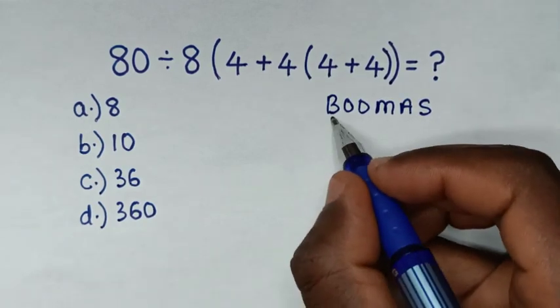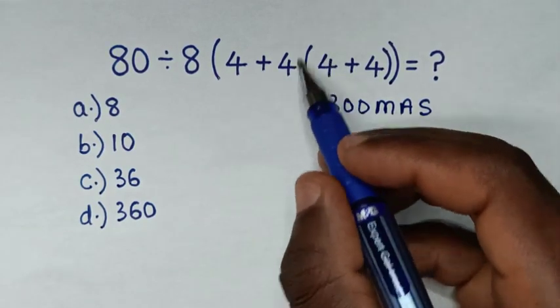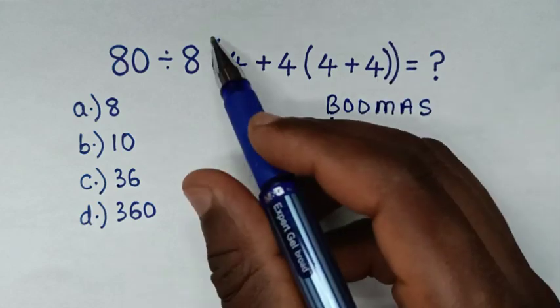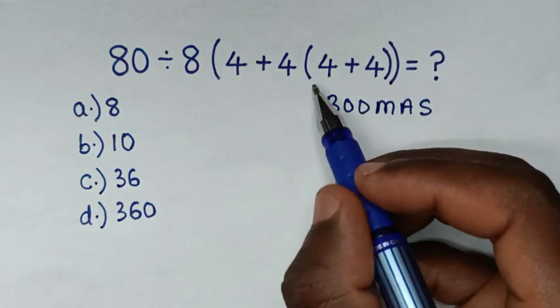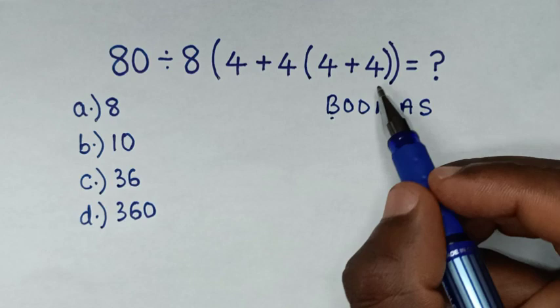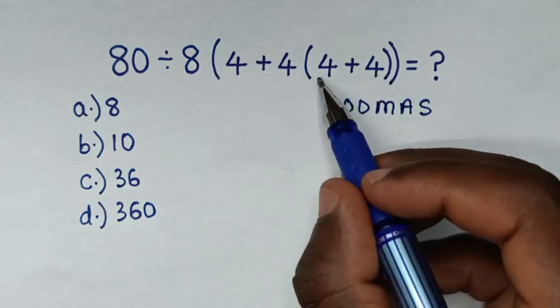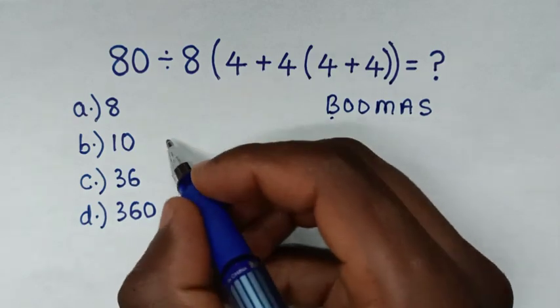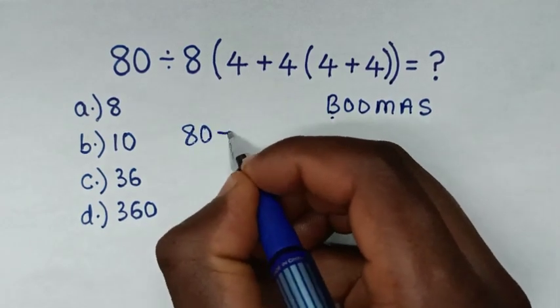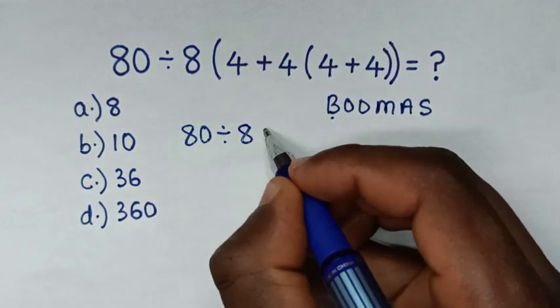B is bracket. We have inner bracket and outer bracket, so let's first deal with this inner bracket operation. Inside this inner bracket is 4 plus 4, which is 8. So it will be 80 divided by 8, bracket 4 plus 4 brackets. As 4 plus 4 is 8, bracket, then bracket.